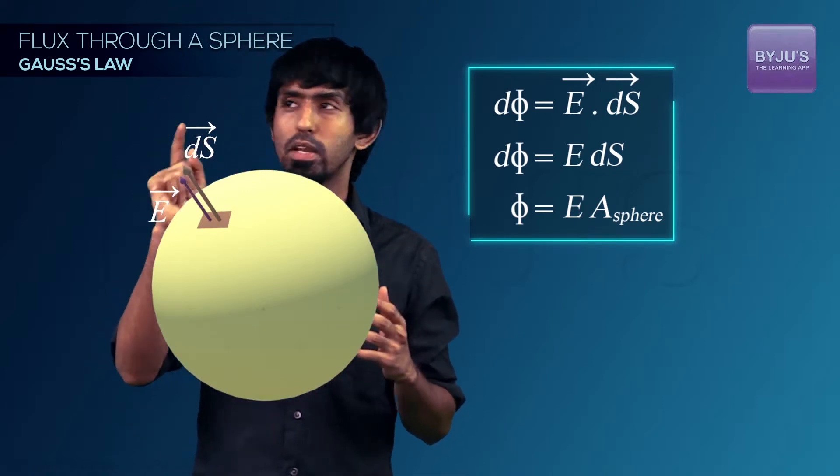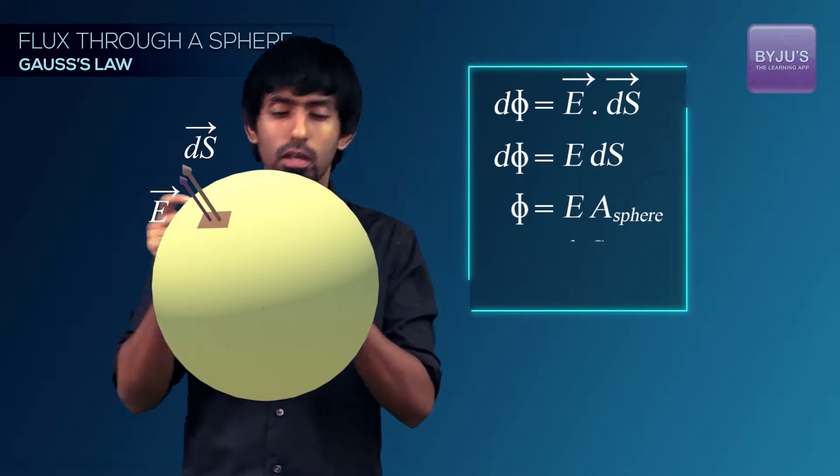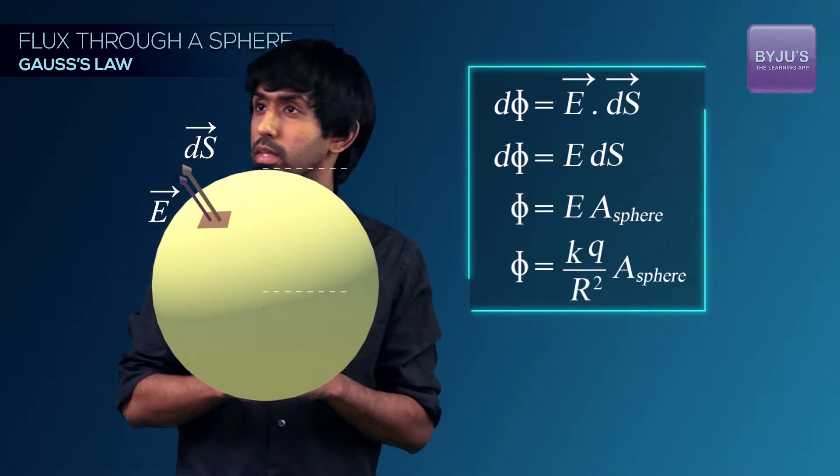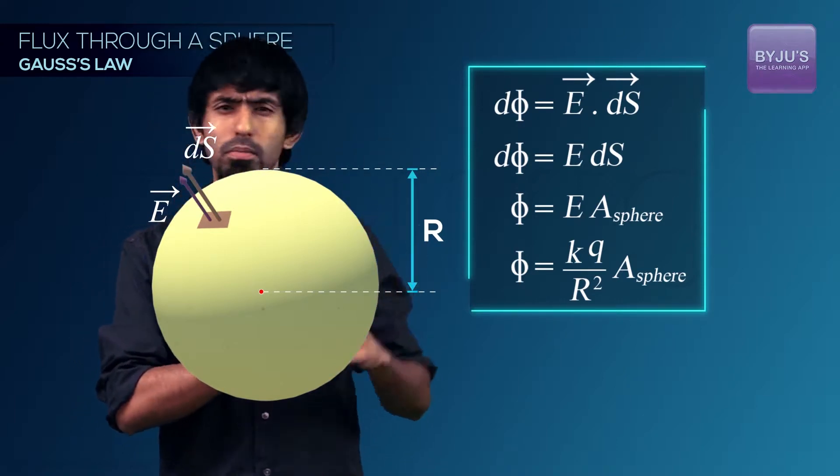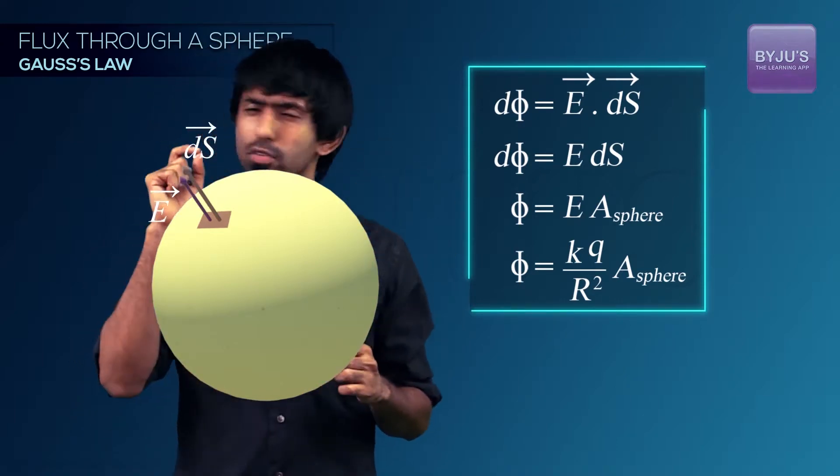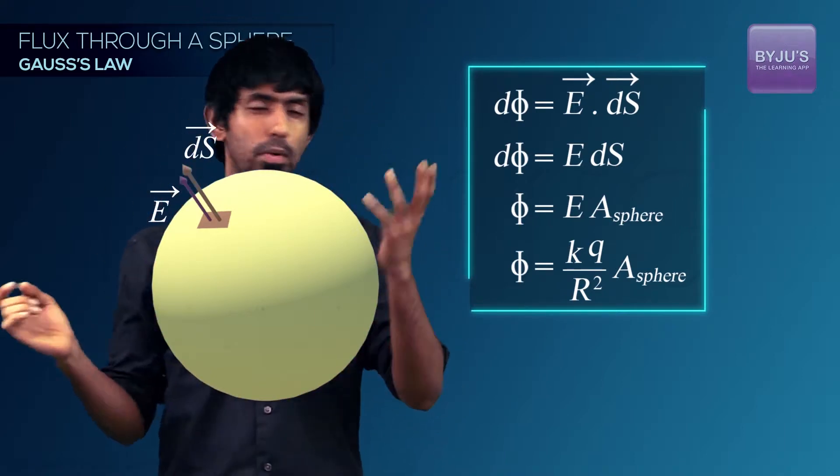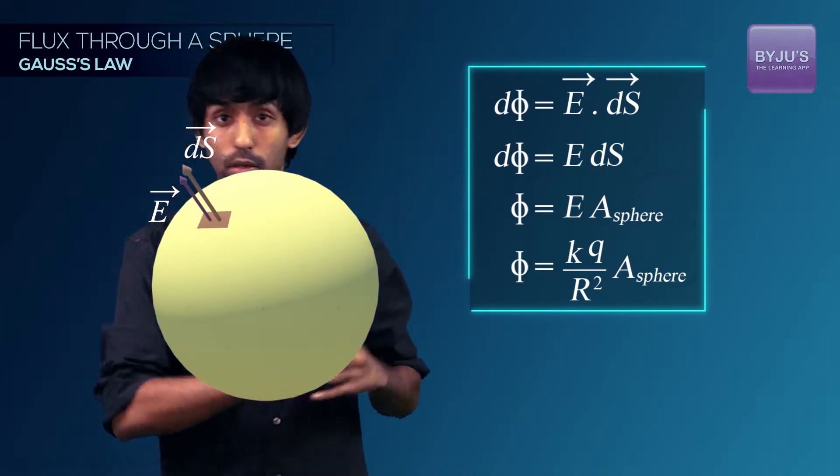So what's the electric field at that point? It's going to be K Q by R squared. The R is the radius of the sphere, so we know that our K is 1 by 4 pi epsilon naught, but yeah, let's keep it that way. So if you've done this now, then what's the area of this sphere? Because you have to multiply it with that and then you have your flux.